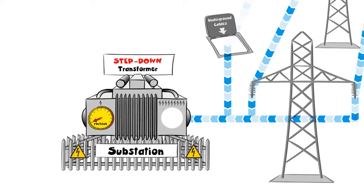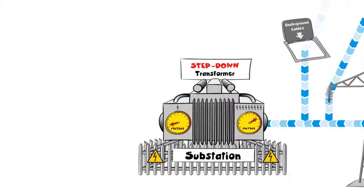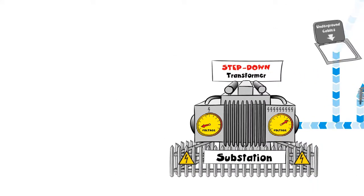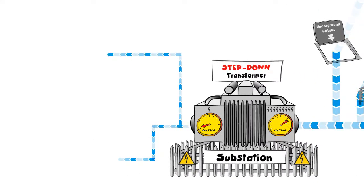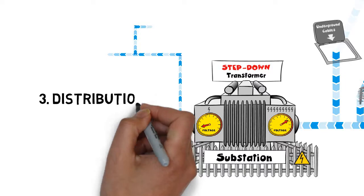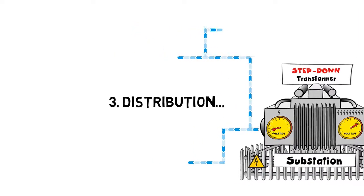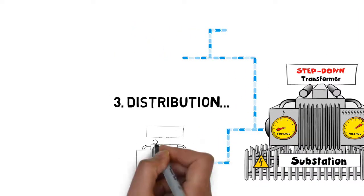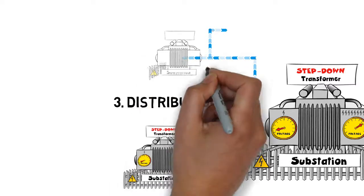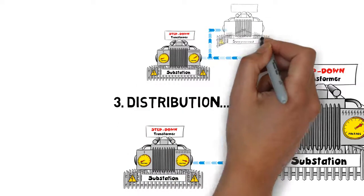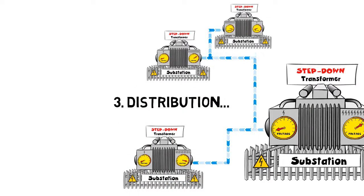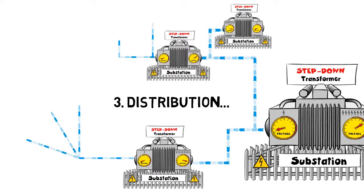Once the electrical energy reaches the destination, it's brought down to lower voltages to be distributed to different users across the nation. This part of the journey is called distribution. A distribution network consists of different users, and all these users require power at different voltages. In order to supply the end user with the required voltage, power distribution networks once again use transformers to convert the electricity to the required voltage level.